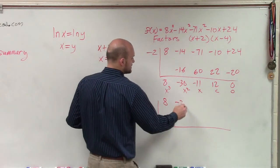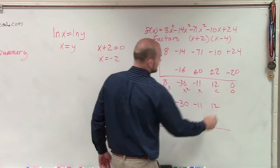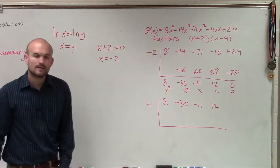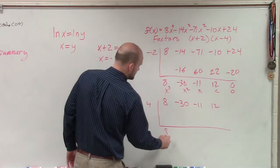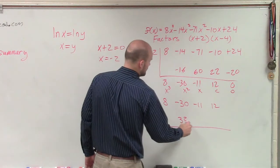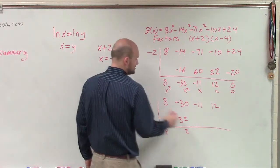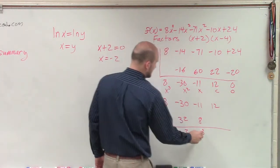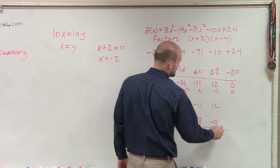So I do 8, negative 30, negative 11, and 12. So now I bring down the 8. 8 times 4 is 32. This becomes 2. 2 times 4 is 8. 4 times negative 3 is negative 12, which is a 0.